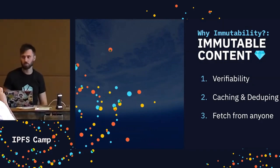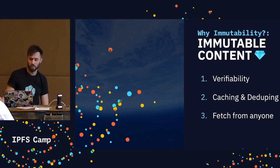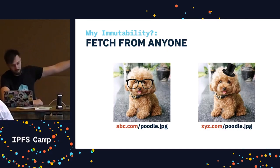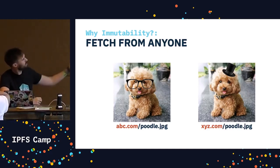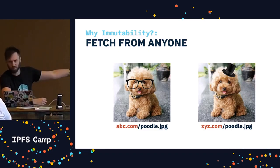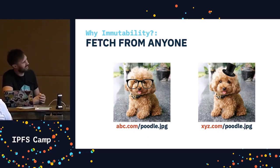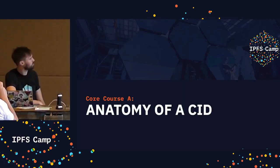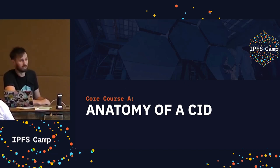Fetch from anyone: if the content is immutable and I can verify its integrity, I should just be able to get it from anyone, and this suits peer-to-peer really well. But that's not true on the web today — if two sites host the same content, we can't trust that any of those copies are correct without a trusted source, because we can't verify integrity. So we use content addressing in IPFS, and we use a special hash called a CID — content identifier. We're going to take a closer look at that now in part two of five.